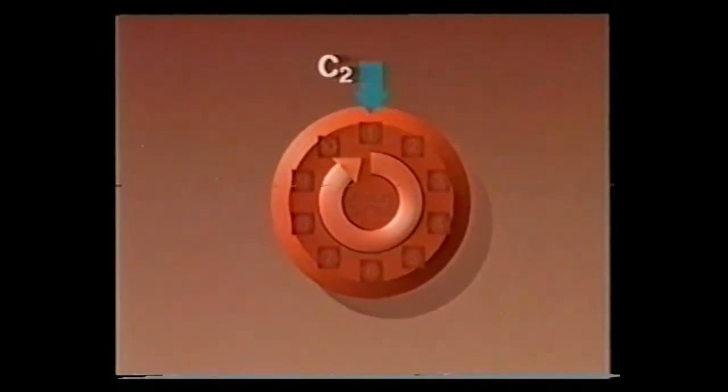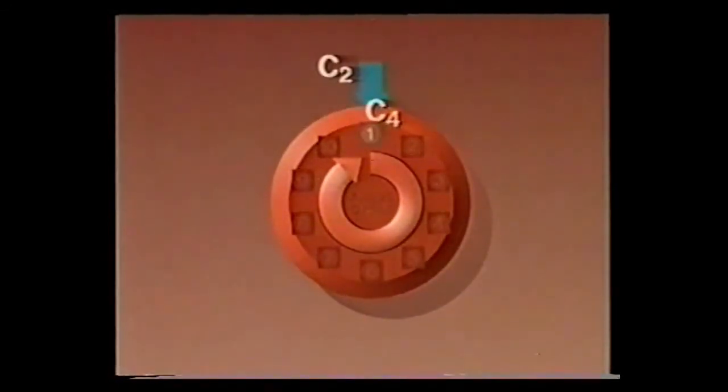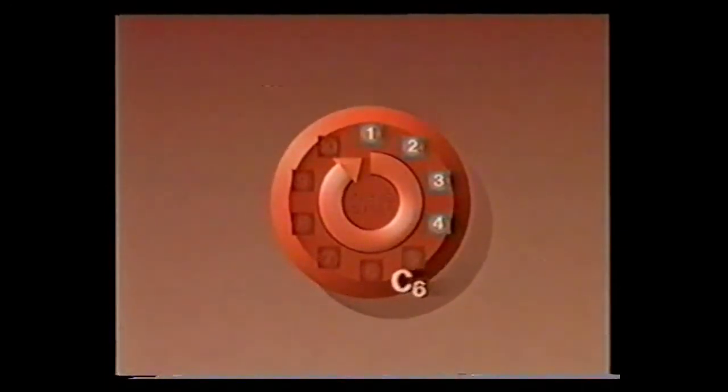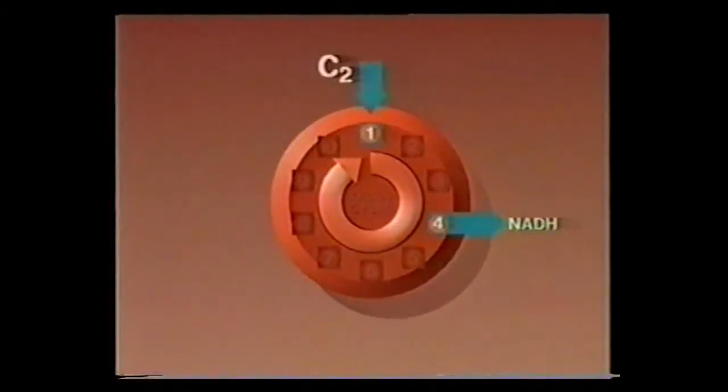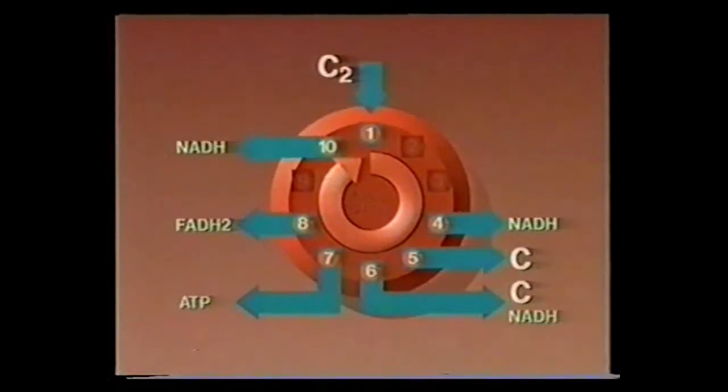The two-carbon acetyl-CoA joins with a resident four-carbon compound, producing a six-carbon compound. Through successive reactions, two carbon atoms are given off, but it is the release of energy bundles that we're interested in: ATP and the intermediate carriers. That's the overview of the Krebs cycle.